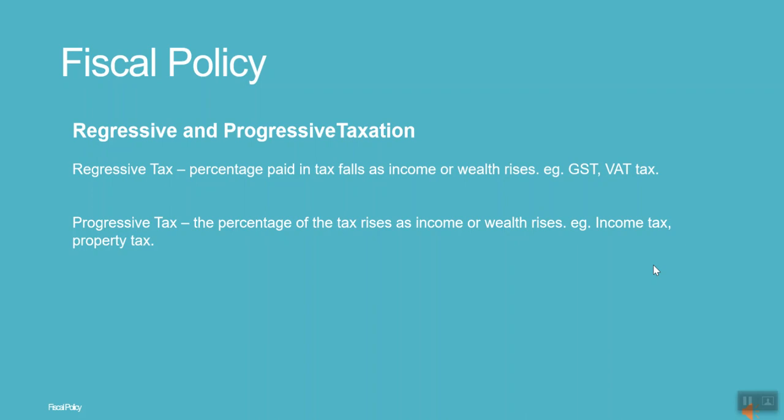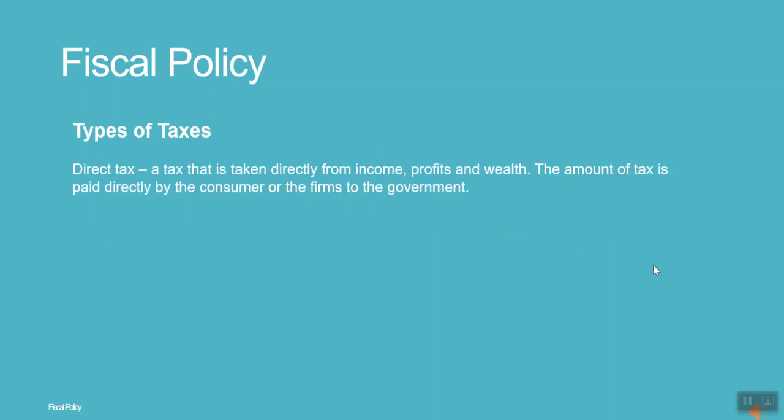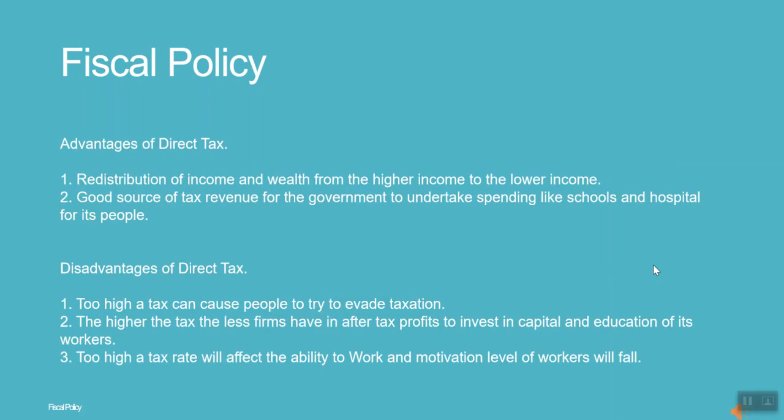Examples of progressive taxes are income tax and property tax. Direct tax is a tax that is taken directly from income, profits, and wealth.